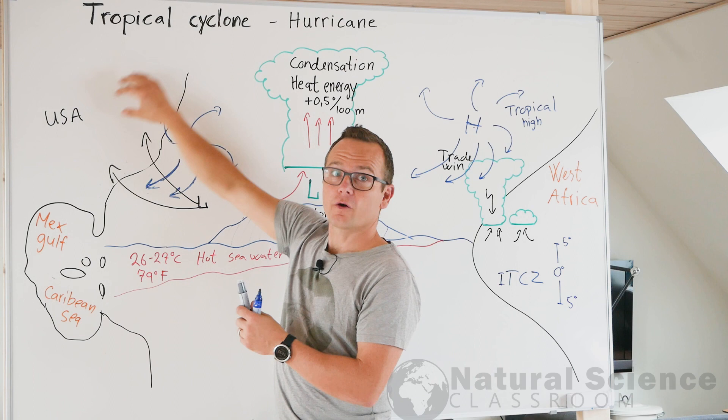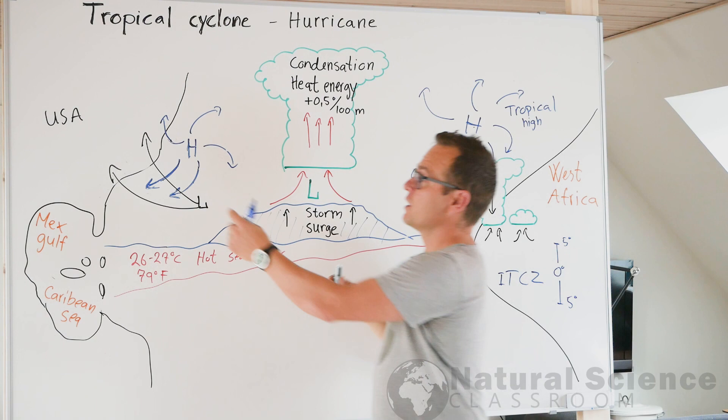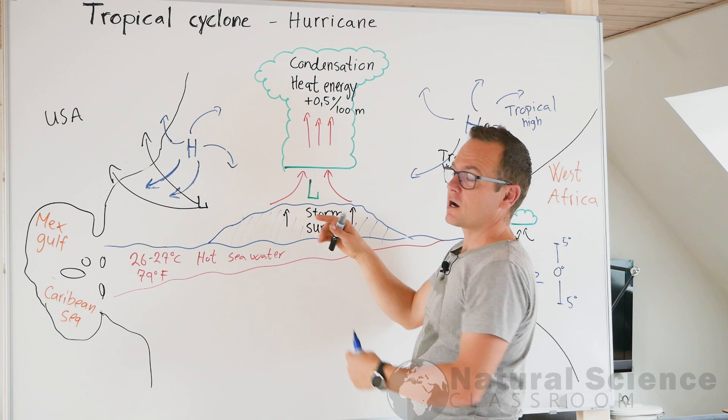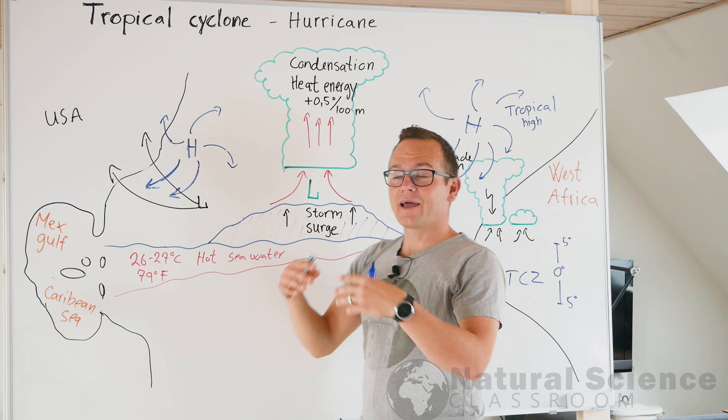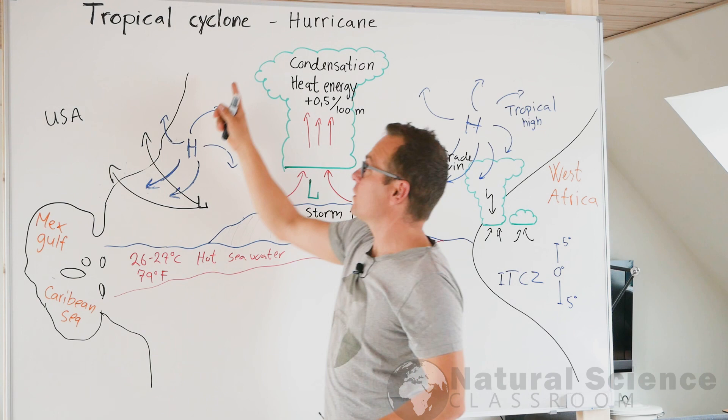When this weather system hits land or it hits colder seawater, what happens? It totally falls apart, because when it's over land, there will be no hot water vapor going into the cloud. And if there's no hot water vapor, there will be no condensation process. And without the condensation, the heating of the air inside the cloud is just dying out. And that's why this whole weather system is falling apart when it reaches land or it reaches colder seawater up north.